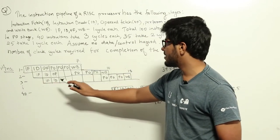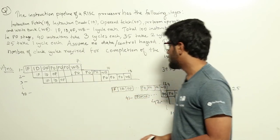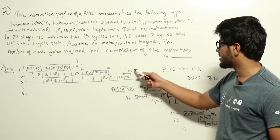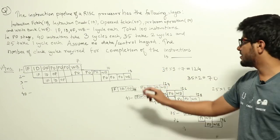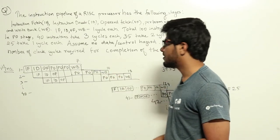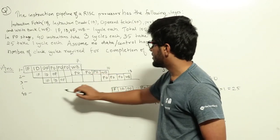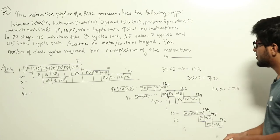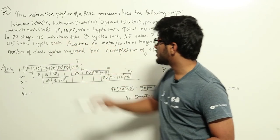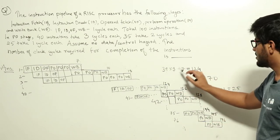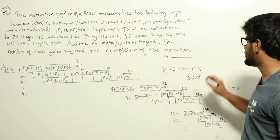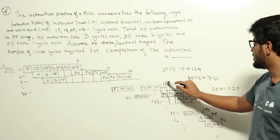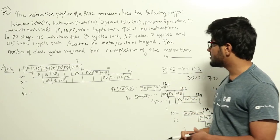Similarly for instruction three, instruction fetch, decode, and operand fetch can be done anywhere, but perform operation can start only after perform operation of instruction two is complete. It takes three cycles then write back, making 13 cycles total. Each instruction adds three additional cycles from the previous one. The first took seven cycles, then there are 39 remaining instructions each adding three cycles: 39 × 3 + 7 = 124 cycles total to complete all 40 instructions with three-cycle perform operations.